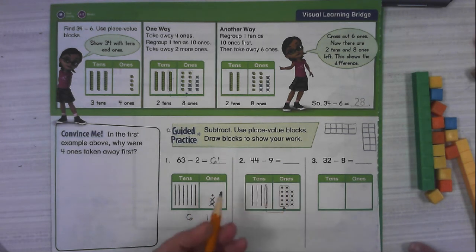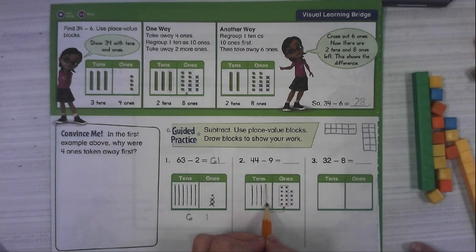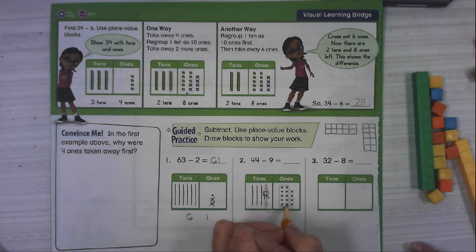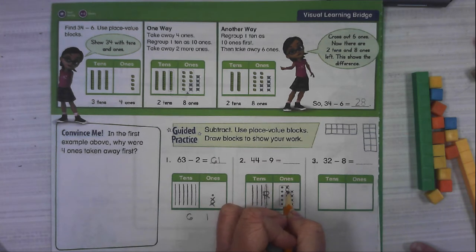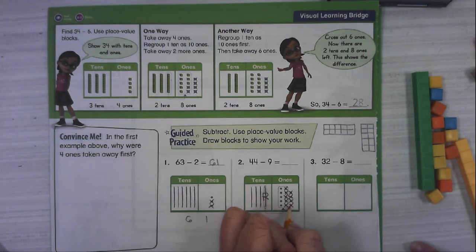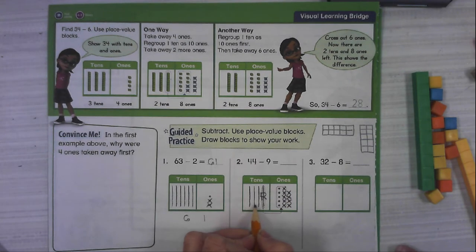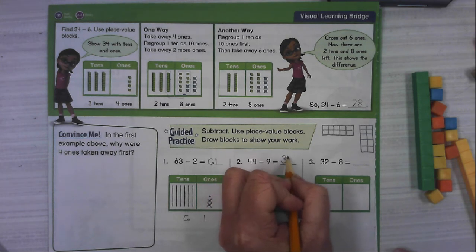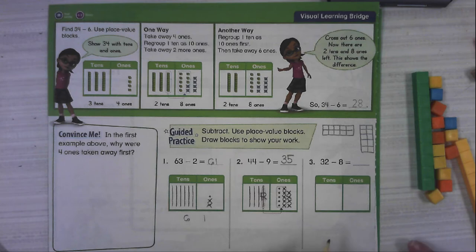For 44 minus 9, they've modeled for us 44. They had to come get another ten, which has been regrouped into 10 ones. And then you can see we have dots where we need to mark out 9 ones. What's left? 10, 20, 30, 31, 32, 33, 34, 35. Sorry, I could tell there's a lag between my voice and my pencil.